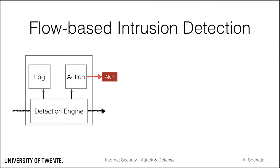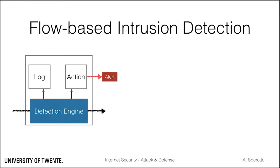Let's first have a look at why we need flow-based intrusion detection. There are several factors that can limit the processing speed of an IDS, especially for increasing line speed and link load. First, the network card of the IDS host introduces a limitation to the number of packets that can be captured and processed. Second, the detection engine is often implemented in software, and third, the detection engine needs a certain processing time depending on the complexity of the detection algorithms to identify an attack.